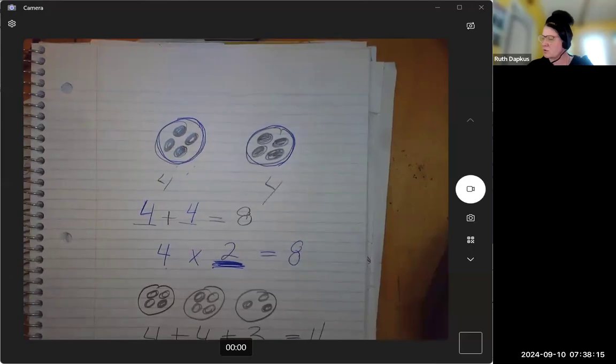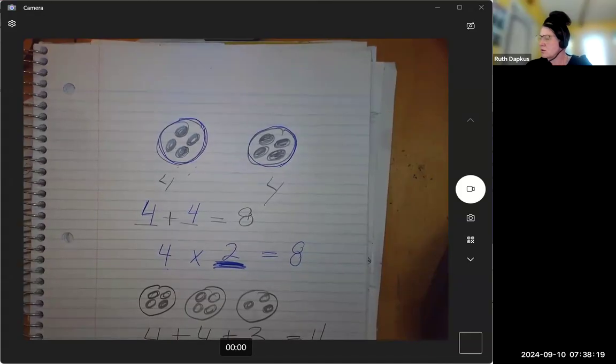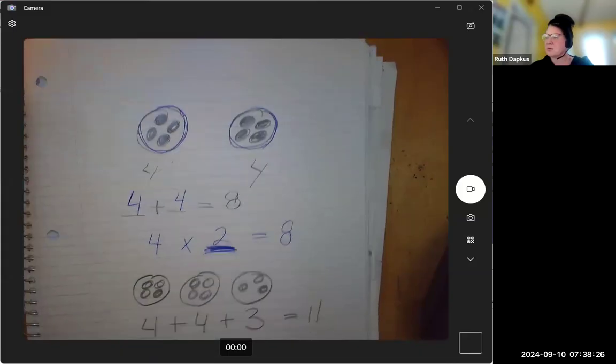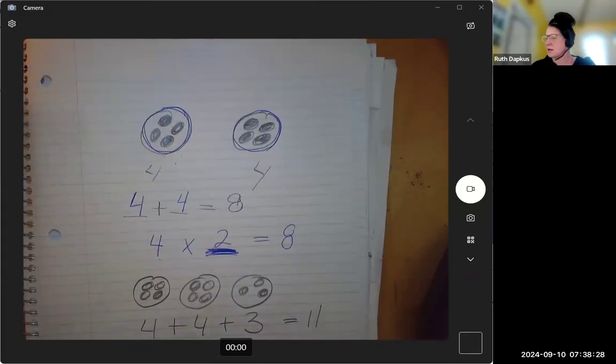We'd have to have equal groups, right? We'd have to have equal groups. Right, if we had four plus four...